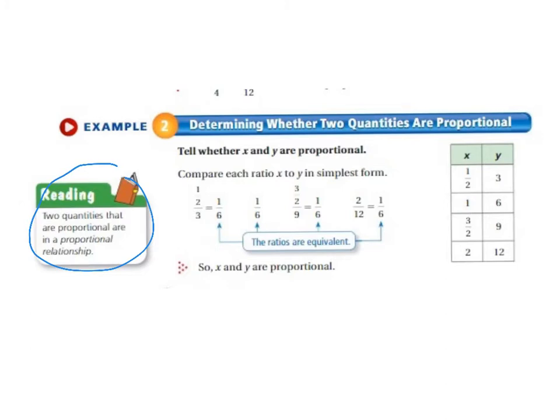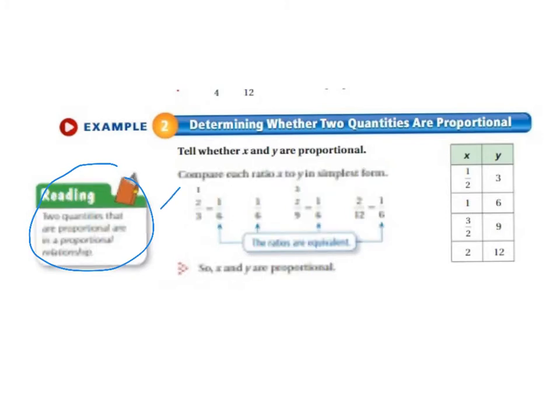This is extremely similar to what we just did in example 1. So it says compare each ratio x to y in simplest form. So if you look at 1 half and 3.